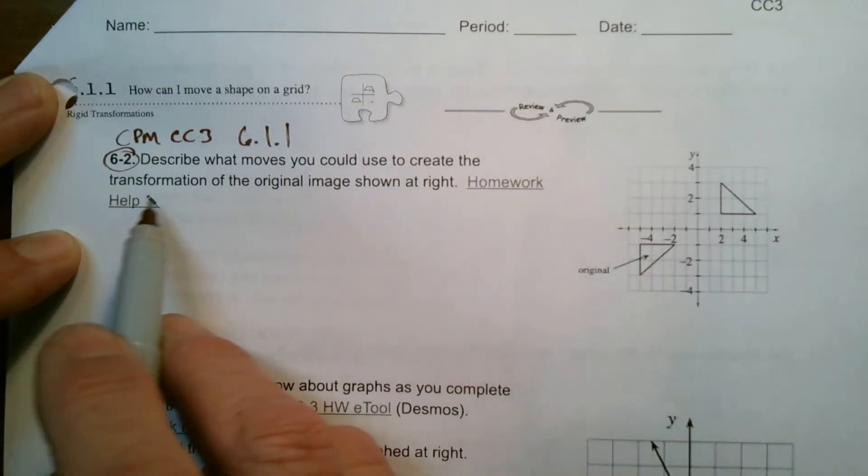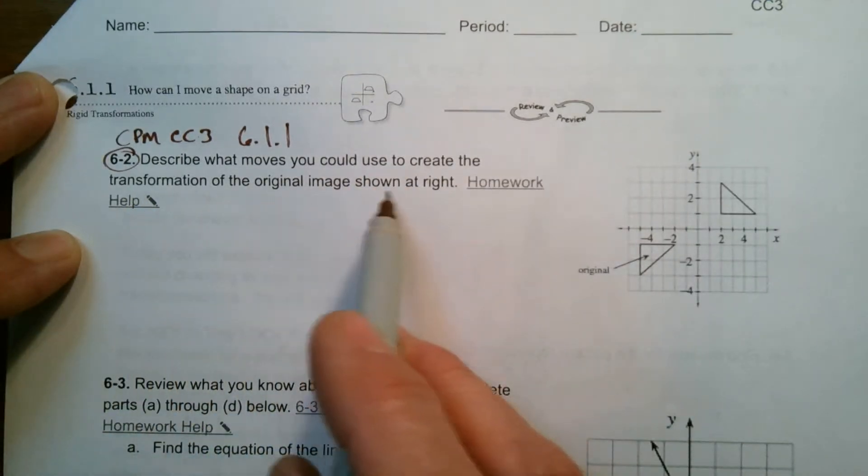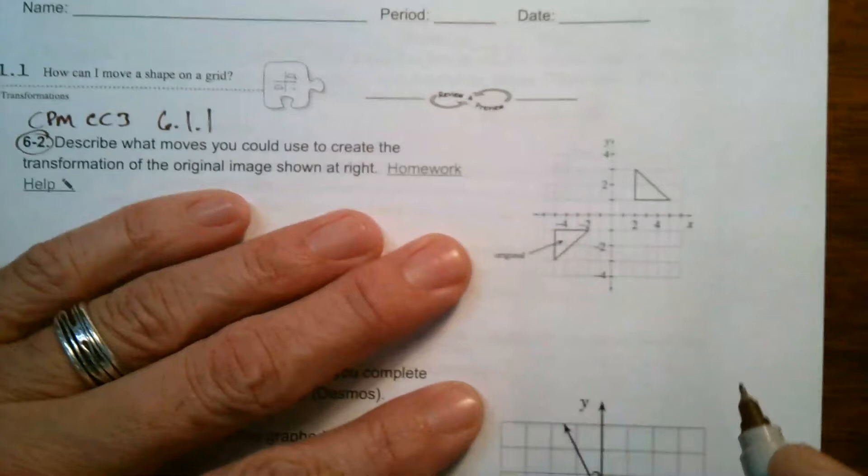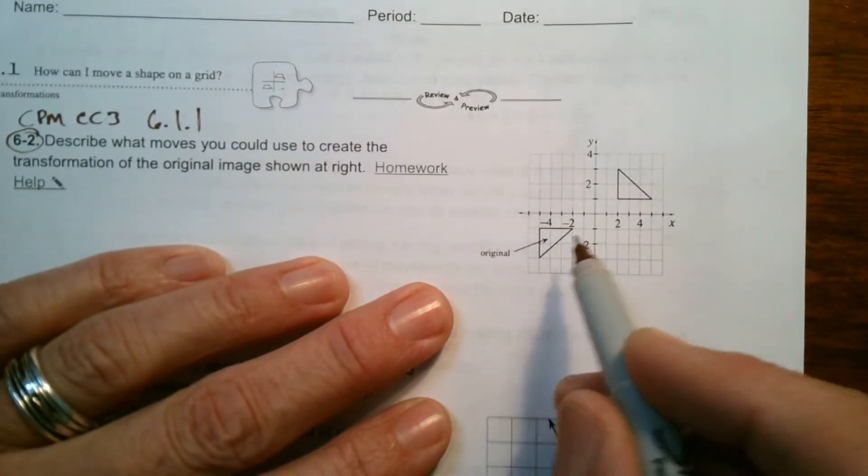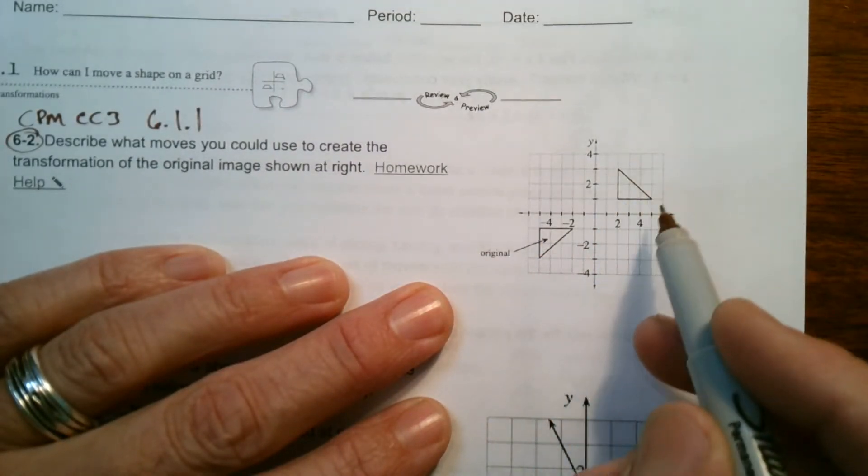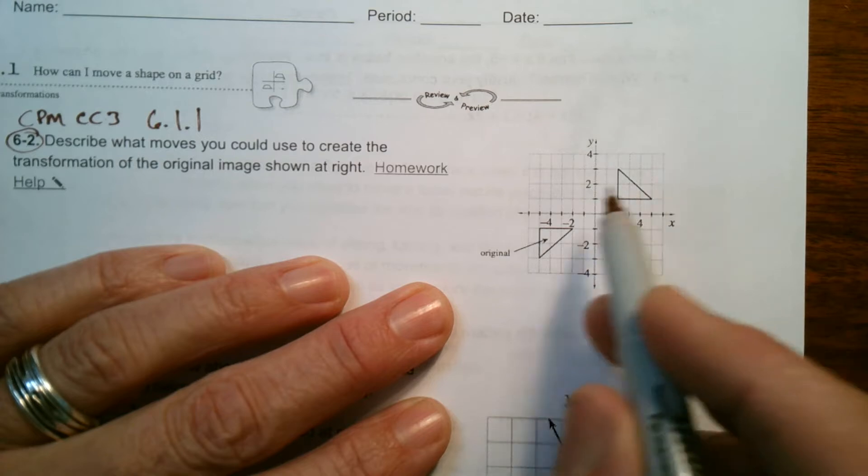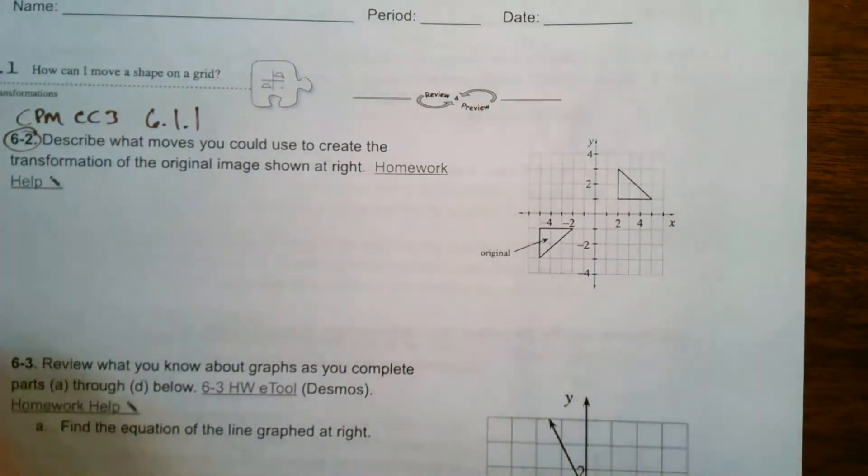Describe what moves you could use to create the transformation of the original image shown at the right. So here's our original image and we see it's now here. So that's the original and how did I get it there? So let's talk through this.